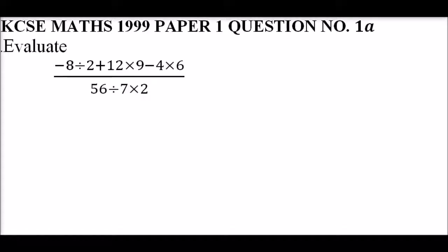This is 1999, Question Number 1a, and we are told to evaluate. We have minus 8 divided by 2, plus 12 times 9, minus 4 times 6, all divided by 56 divided by 7 times 2.